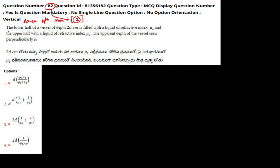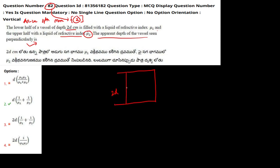In this question it is said that the lower half of a vessel of depth 2d centimeter is filled with a liquid of refractive index mu1 and the upper half with a liquid of refractive index mu2. There is a vessel whose height is 2d, filled with two fluids — liquid 1 with refractive index mu1 and liquid 2 with refractive index mu2 — and we have to find the apparent depth of the vessel seen perpendicularly.